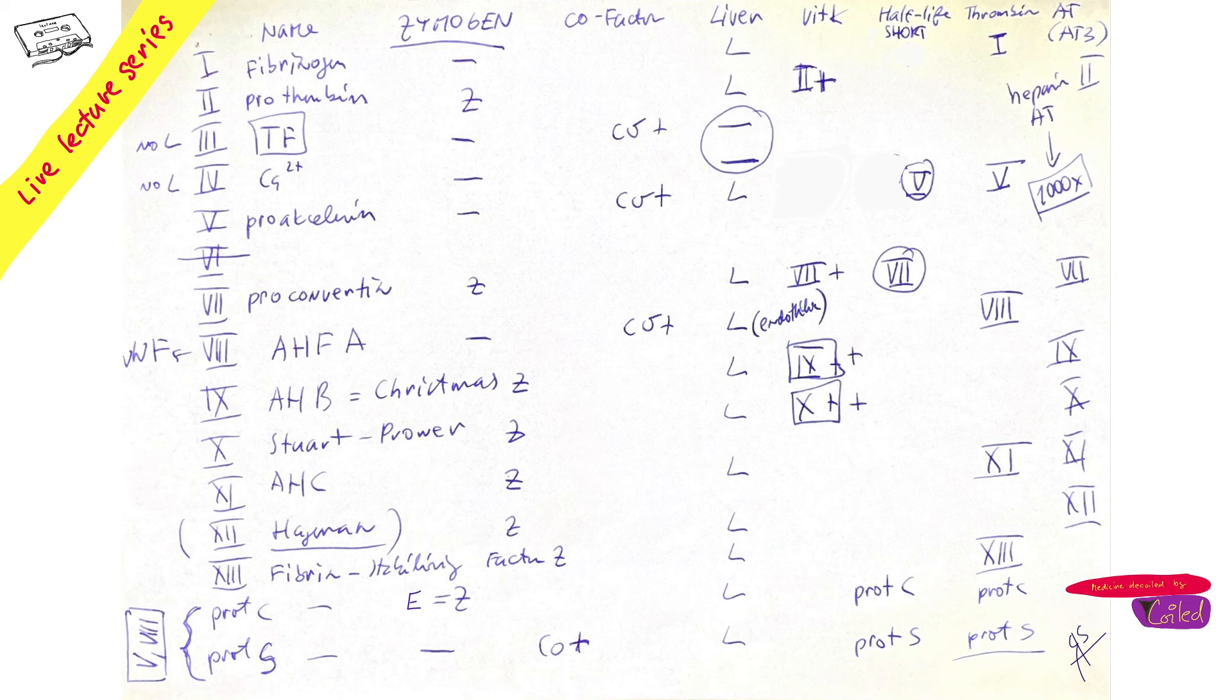I'm going to put here, let's say, what is the name: zymogen. What does it mean? Zymogen, pro-enzyme, it's a non-active form. Zymogen, cofactor, liver, vitamin K, half-life.